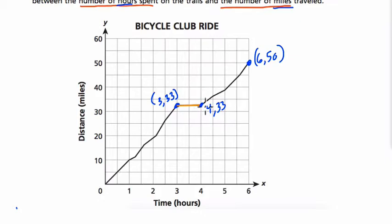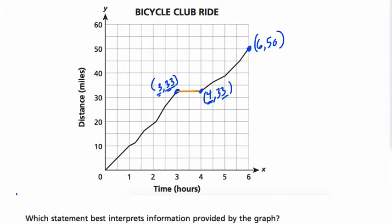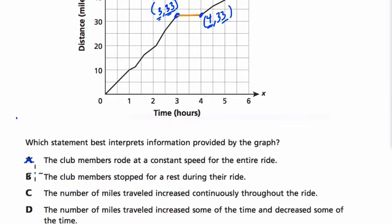It looks like on this graph, from the hours of 3 to the hours of 4, they did not increase their distance. We're still at 33 miles. So they didn't move at all in that hour. So it's reasonable to then infer that during that hour they might have rested. And I would choose choice B.